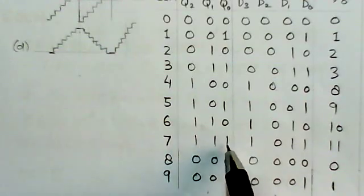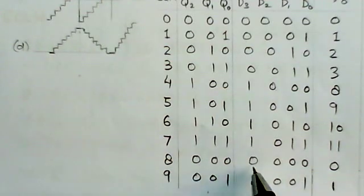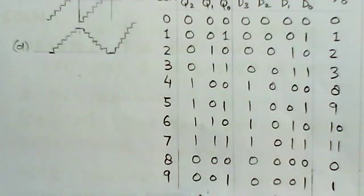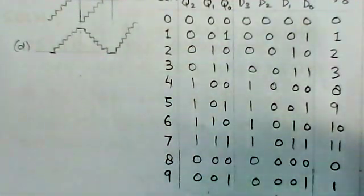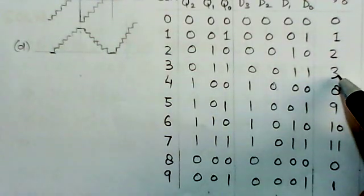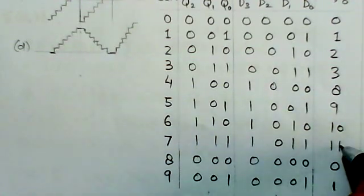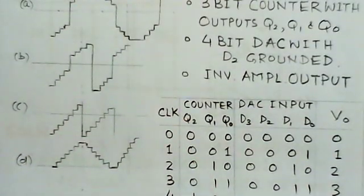After 11, the 3-bit counter will reset and give 0, 0, 0 again, it will be 0. Again at 9th clock pulse it will be 0, 0, 1, which is 1, and so on it will continue. What we observe here is the voltage levels are 0, 1, 2, 3, then it goes to 8, 9, 10, 11, then back to 0 and so on.